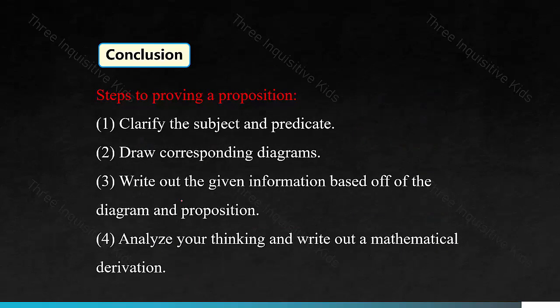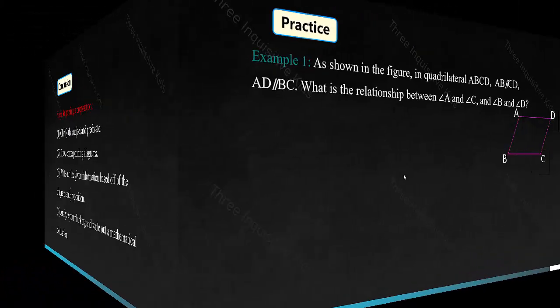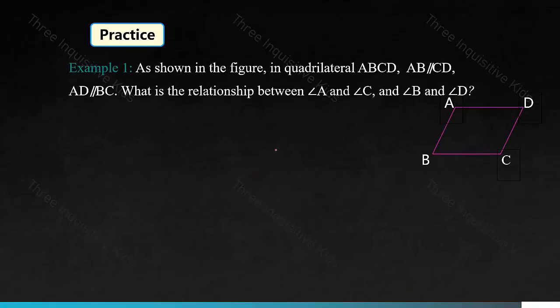Here are the steps to proving a proposition. First, clarify what's the subject — what are you already given — and what are you trying to prove with the predicate. Then draw corresponding diagrams. Then you can write out the given information based off of the diagram and proposition. Then analyze your thinking and write out a clear mathematical derivation. Now let's dive into some practice.